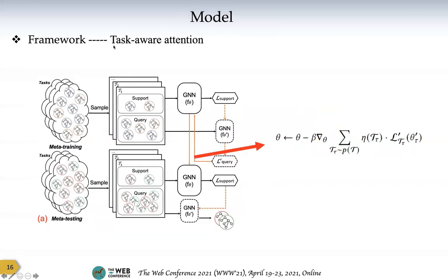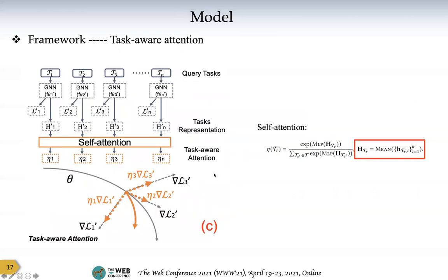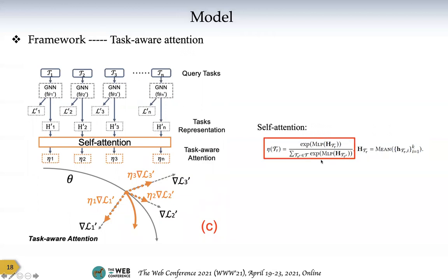One more design is task-aware attention. When calculating the meta-loss to update the graph neural network, we calculate a weighted sum of each task's loss. In the traditional way, these weights for each task are the same. But in the training process, different tasks may play different roles. So we define task-aware attention to give each task a weight measuring its importance in training. We use the molecules' mean pooling to calculate task representations, then use a self-attention function to calculate the weight of each task.